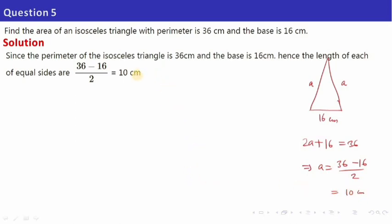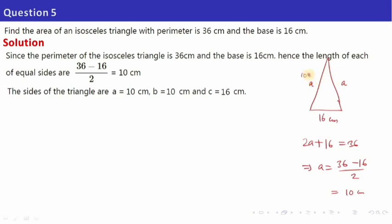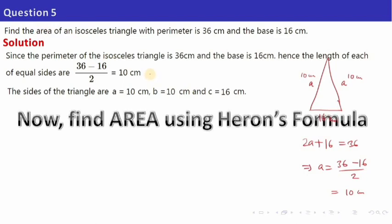Now we have all three sides: A equals 10 centimetre, another side B equals 10 centimetre, and the third side C equals 16 centimetre. You are asked to find the area, and since we have three sides, we can use Heron's formula to find out the area. You may pause the video and note down till here.